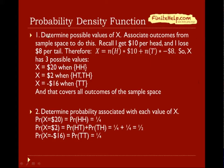We're going to first determine the possible values of X. We associate outcomes from the sample space to numbers. I get $10 per head and lose $8 per tail. Therefore, X = n(H) × $10 + n(T) × -$8.